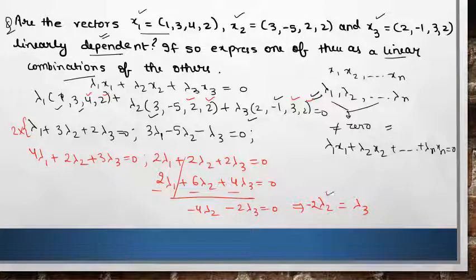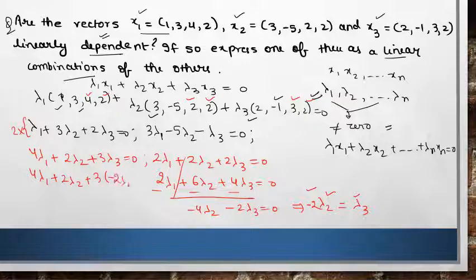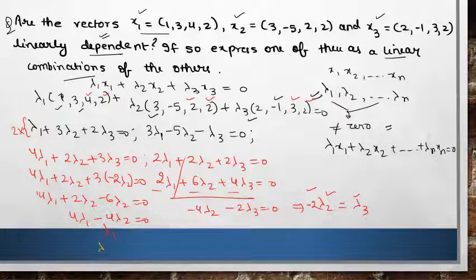Similarly if you put this value here: 4 lambda 1 plus 2 lambda 2 plus 3 lambda 3, which is minus 2 lambda 2, equals 0. So 4 lambda 1 plus 2 lambda 2 minus 6 lambda 2 is 0. 6 minus 2 is 4 lambda 2. That means lambda 1 is equal to lambda 2. If we write all these equations together: lambda 1 equals lambda 2 equals lambda 3 by minus 2.